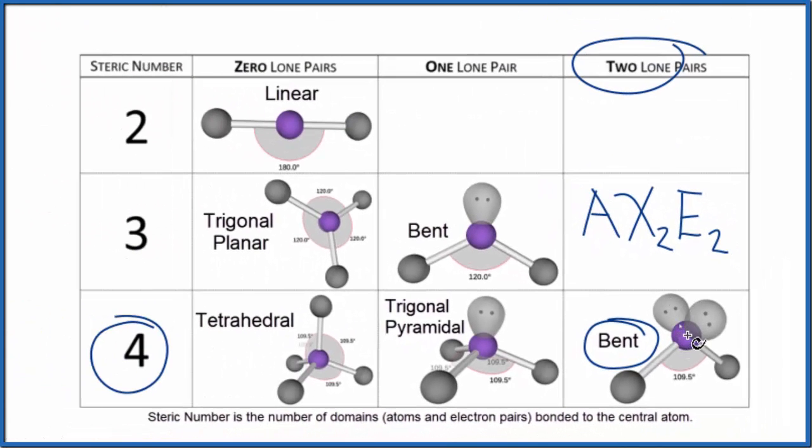This is Dr. B with the molecular geometry, electron geometry, and bond angles for SCL2, sulfur dichloride. It's a bent molecular geometry, tetrahedral electron geometry, and this bond angle here will be about 109.5. The exact number, 103 degrees. Thanks for watching.